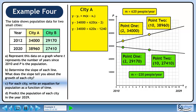Multiply 620 through the brackets on the right side. Bring minus 34,000 across the equals and change the sign. Simplify the equation.